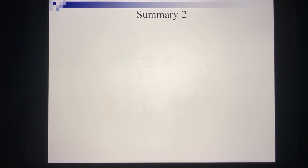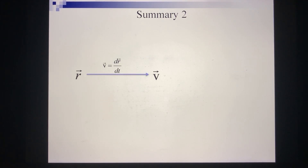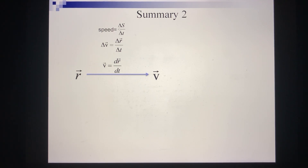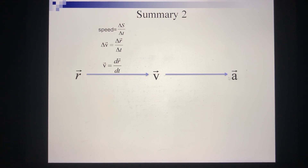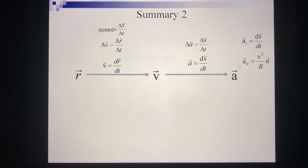Now I will summarize all the information for kinematics. There are three important quantities. The first is the position vector R. Based on the position vector, you can calculate velocity — including instantaneous velocity, average velocity, and speed. Related to position, you also have displacement and distance traveled. Based on velocity, you can calculate acceleration, including instantaneous acceleration and average acceleration. Remember that acceleration is a combination of tangential acceleration and normal acceleration.